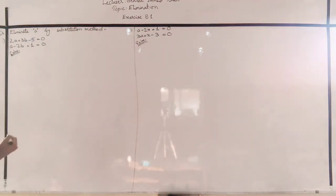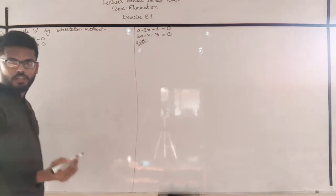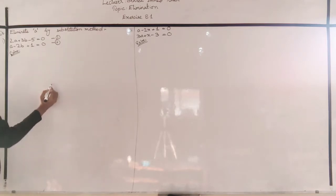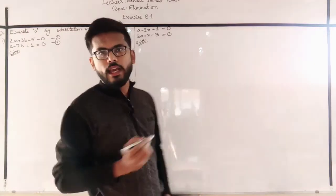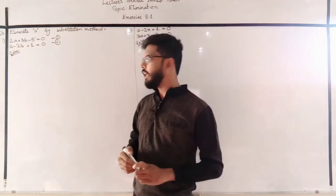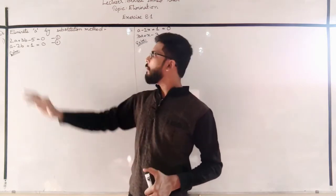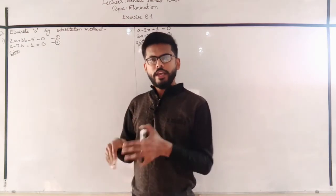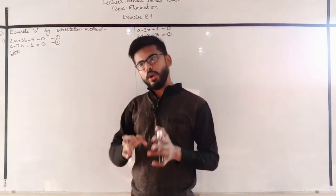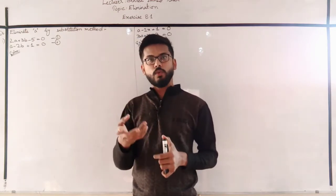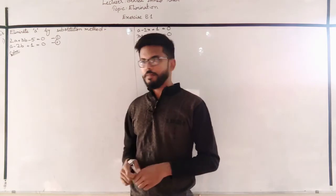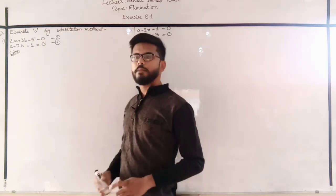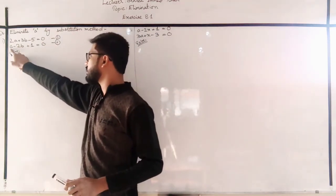Substitution method — you have already studied this a little, and once you do it, it will become clear. This is Question 1 and Question 2. In substitution method, whichever variable you want to eliminate, make an equation for that variable. Here we want to eliminate 'a', so make an equation for 'a' from one of the equations, then put it into the other equation.